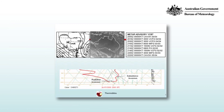Fog conditions — visibility below a kilometer — at 2130, and then you can see the temperature and dew point slowly rising together until by the time we get to 2220 they've come apart by a degree Celsius and conditions are again CAVOK.